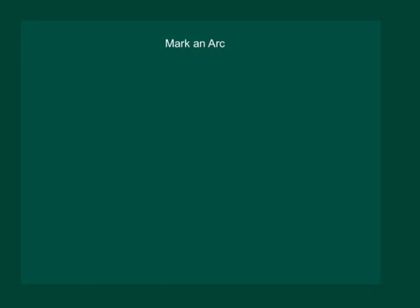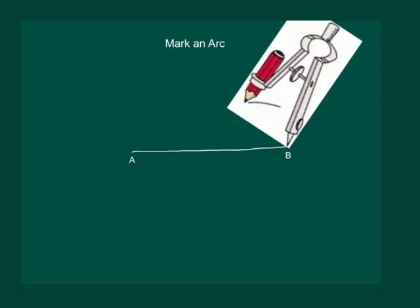That would mean if we have a line segment AB and we are required to mark an arc with B as center, we would keep the pointed end of our compass at the point B and mark an arc.